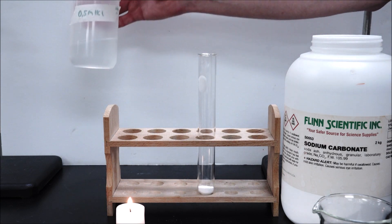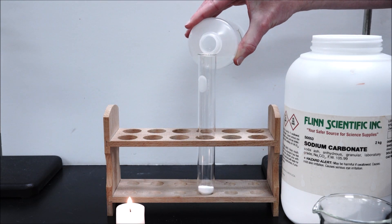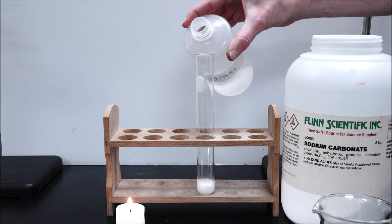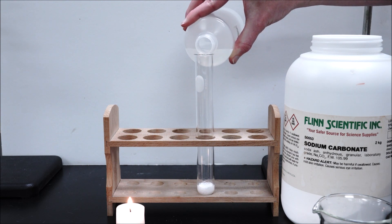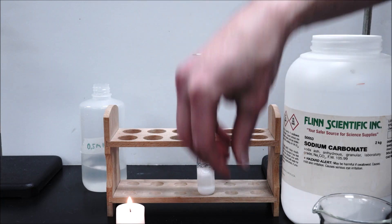When we take a carbonate and add acid to it, we get bubbles, we get some kind of gas. Let's say we were curious about what that gas might be, we could do what's called a splint test.